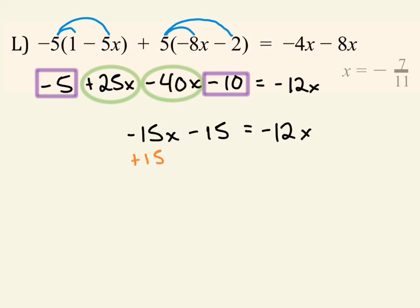So I combine like terms first. Then I start first moving my variables to one side. Negative 15 was the lower coefficient, so I added 15x to both sides. And then I divide both sides by 3 to get x equals negative 5.